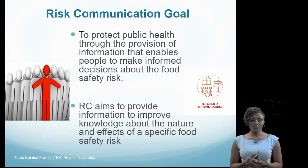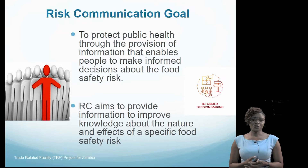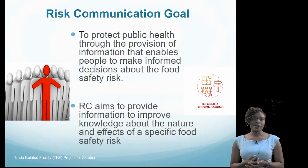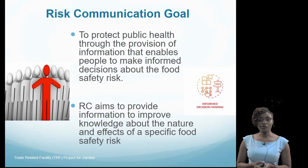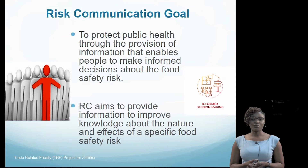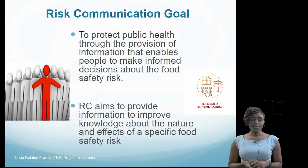To get started — what is the goal of risk communication? Why should we communicate our food safety risks? The principal goal of risk communication is that we need to protect public health. We do this by providing information to the public so that they are able to make informed decisions about that particular food safety risk. If somebody is going to eat a particular food with a particular hazard, they should do that with an informed background of that risk. Risk communication aims to provide information that will improve the knowledge about the nature and effects of that food safety risk.